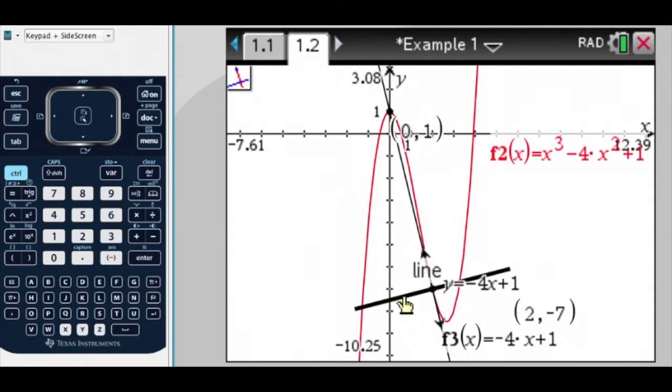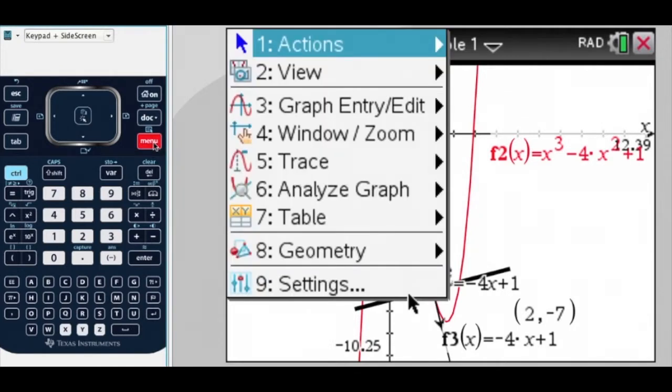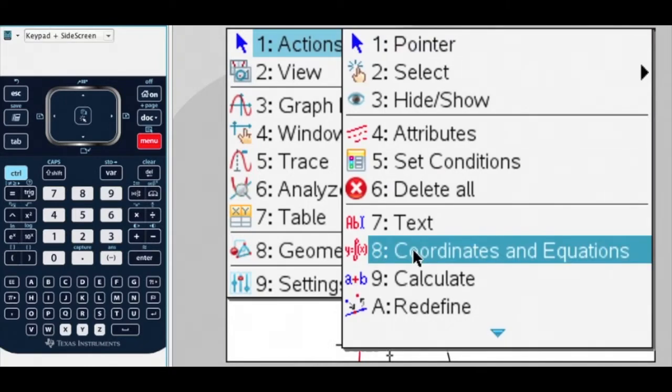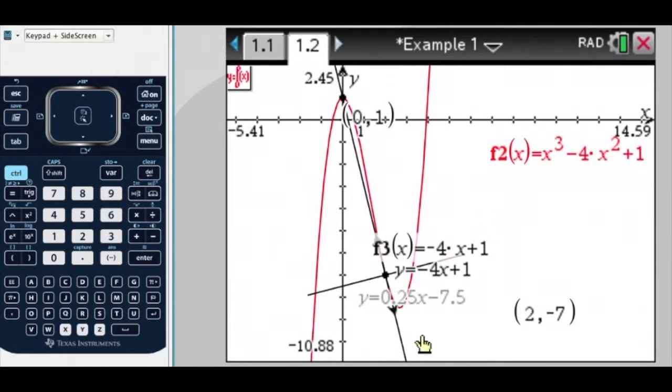And now I can't see the equation of that line, this over here is my tangent. So if I click on this line here, and go Menu, Actions, Attributes, or Coordinates and Equations I should say, of this line, y equals 0.25x minus 7.5, or in other words, a quarter x minus 7.5.